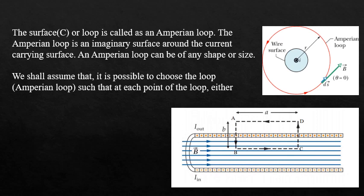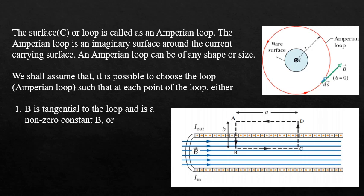Consider an Amperian loop A, B, C, D, A such that half of the loop is inside the solenoid and the other half is outside. The magnetic field can either be tangential to the loop — as seen for BC, where the magnetic field is tangential to line BC — or normal to the loop. For line DC, the magnetic field is normal to the line, or B can vanish. In the case of AD, the magnetic field is 0 because the magnetic field outside the solenoid is equal to 0.